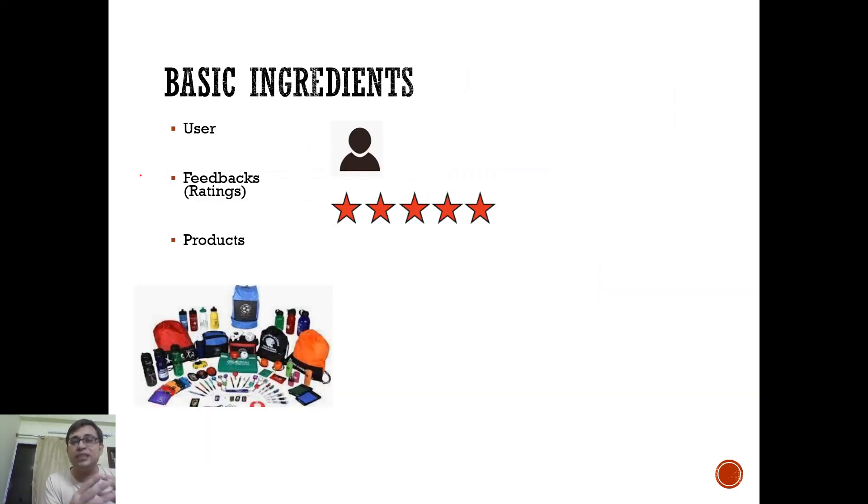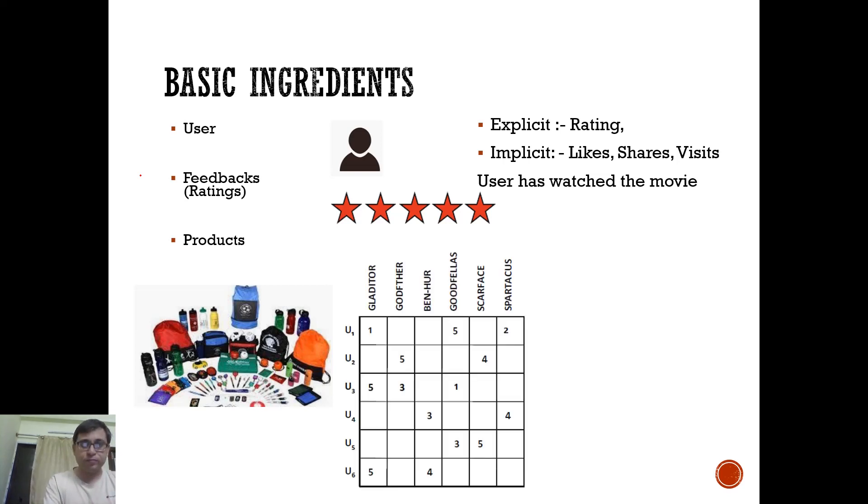So recommendation system actually has three components. You have users, you have products, and you have feedbacks. So users actually give feedback about products. And on the basis of that, you can think of recommending some new products to that particular user or maybe a new user altogether. In this case, the feedbacks that we have shown here is rating, but the feedback can be explicit where it is kind of rating or it can be implicit. So some user has watched a movie but has not rated. So as he has watched it, you know that he must have liked it or he had some affinity towards that movie.